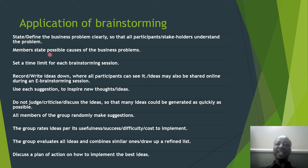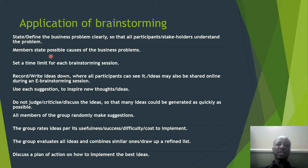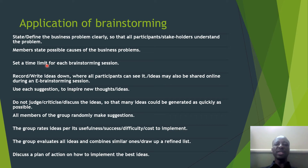Step number two: members state possible causes of the business problems — such as declining quality or declining profits. Business managers must allow members to identify or state possible causes of the problem. Then set a time limit for each brainstorming session — do not allow workers to take unnecessary time. You have to limit the time, maybe five minutes each or three minutes each, depending on the time available.